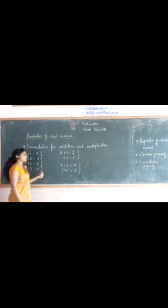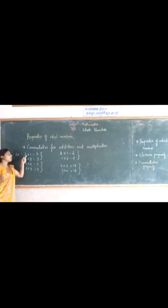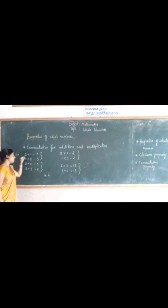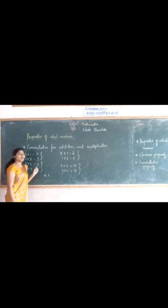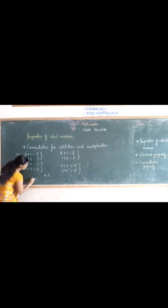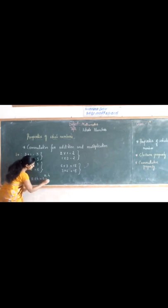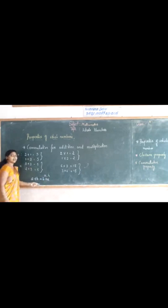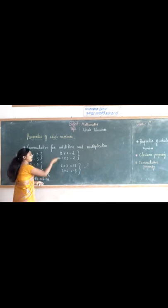Here the order of the numbers is changed. We can take one number as A and another number as B. We apply addition and multiplication for commutative. So we can write one formula for commutative: A plus B which is equal to B plus A. This is for addition.